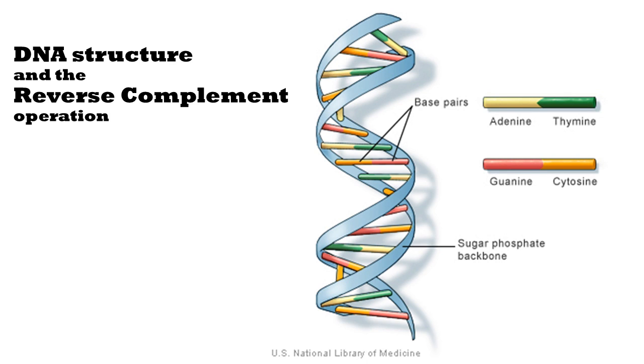DNA is a polymer composed of a sugar phosphate backbone and four base pairs. The bases adenine and thymine always bond to each other. Guanine and cytosine similarly are always paired.